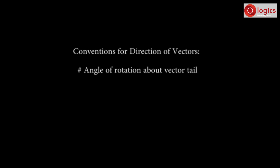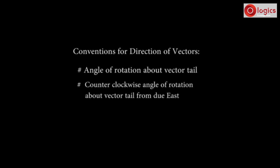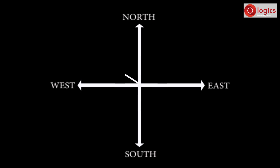First convention: angle of rotation about the vector tail. Second convention: count the counter-clockwise angle of rotation about the vector tail from due east. Let us see the first convention. Let's draw a vector from west to north direction. Let's say the angle is 40 degrees. The standard notation for this direction is 40 degrees north of west.